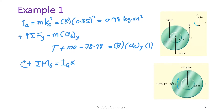The 100 N force causes clockwise rotation (positive), and the tension causes counterclockwise rotation (negative). So: 100 × 0.2 − T × 0.5 = 0.98·α.